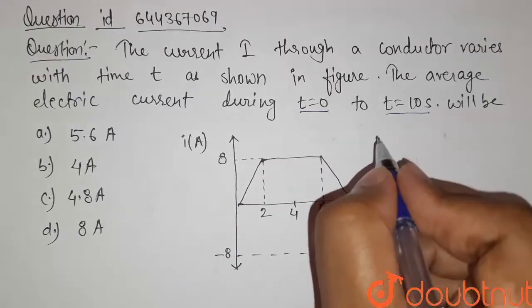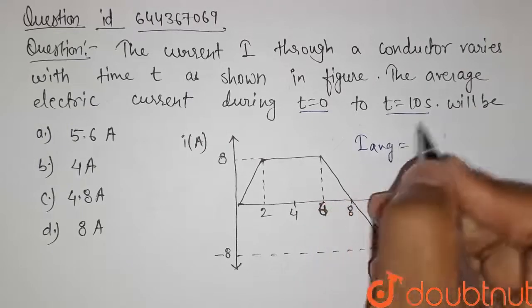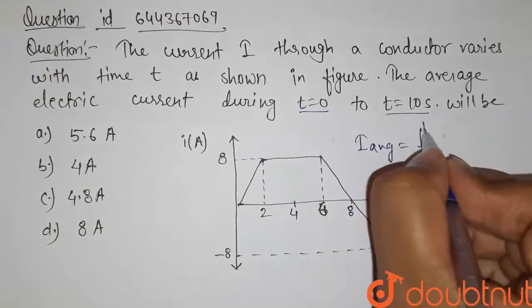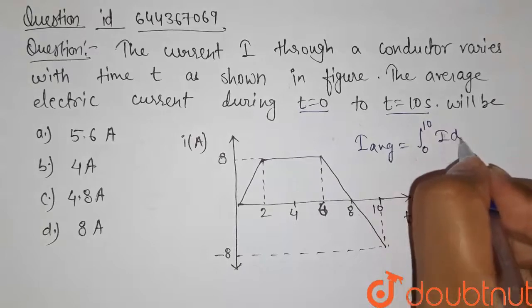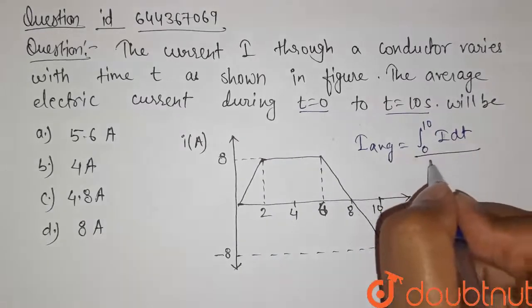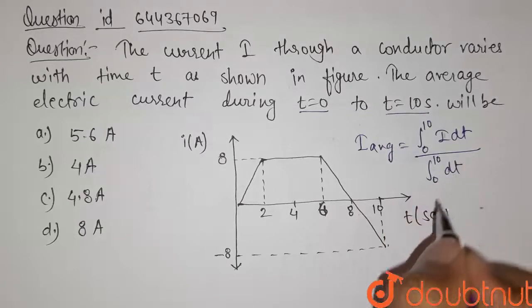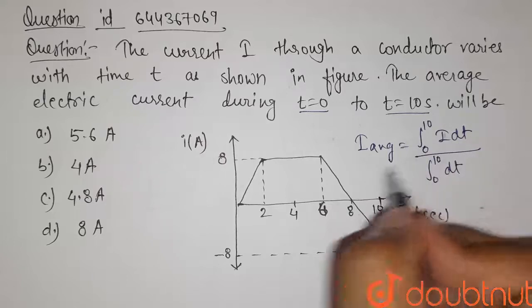The formula for average current, that is i average, is given by integration in the limit 0 to t, that is 0 to 10 seconds, of i dt divided by integration in the same limit, that is 0 to 10, of dt. This will give us the average value of current for this graph.